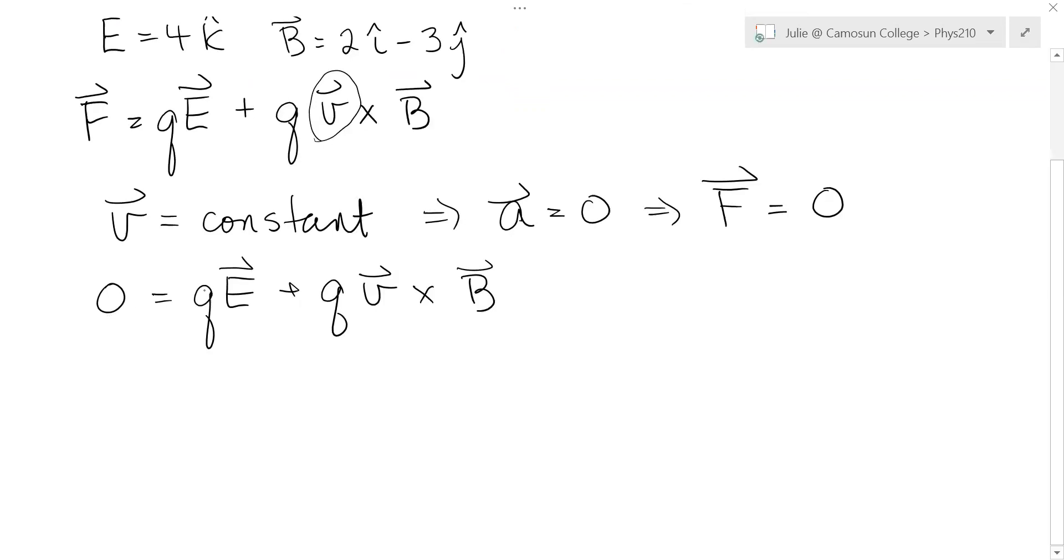Now, because the left-hand side is zero, we can immediately cancel the charge. And basically, we have that zero is equal to the electric field plus V cross B. Let's put in the values for E and B, and we'll see how this simplifies as well.